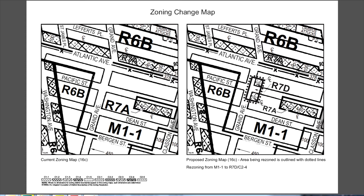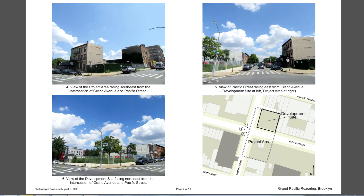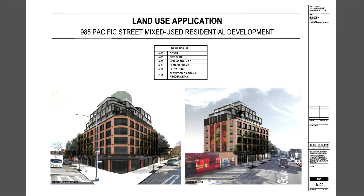The most recently approved applications on the same block and block to the east included an R7A district with C2-4 overlay and an M1-4/R7A district, both finally approved in May 2019. The proposed rezoning would rezone properties from M1-1 to R7D with a C2-4 commercial overlay. The development would be a nine-story building with ground floor commercial use and approximately 64 residential units above, of which 16 would be affordable under MIH Option 1.